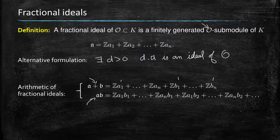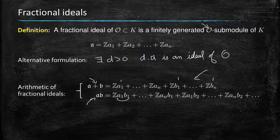Likewise, you can view the product as the smallest ideal that contains all the products of elements of A and B, and that is generated by all the cross products of elements of the form A_i * B_j. One thing that's really important is these aren't bases — the basis of a fractional ideal has N elements, so these are simply generating sets, and linear algebra techniques give us a basis.